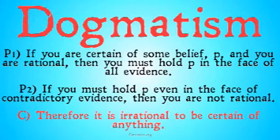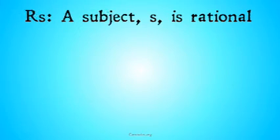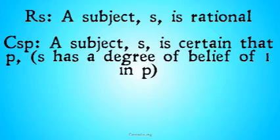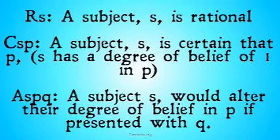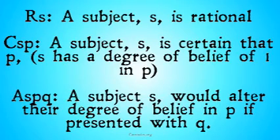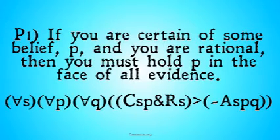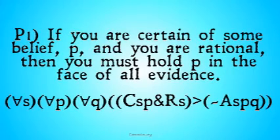What we're going to do is first demonstrate that the argument is valid and then offer justification for why you would believe premises one and two. Some definitions: RS stands for 'subject S is rational.' CSP means 'subject S is certain that P,' or S has a degree of belief of one in P. ASPQ means 'subject S would alter their degree of belief in P if presented with Q.' Premise one is codified as: for all S, all P, and all Q — S is certain that P and S is rational implies that it's not the case that S would alter their belief in P given Q.